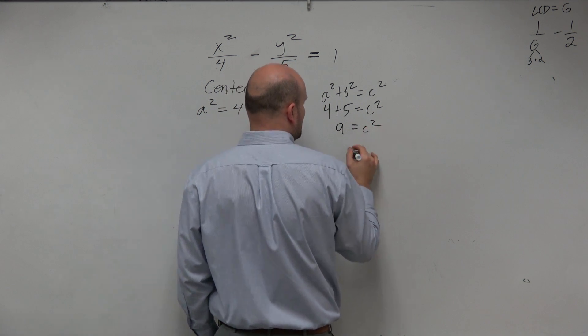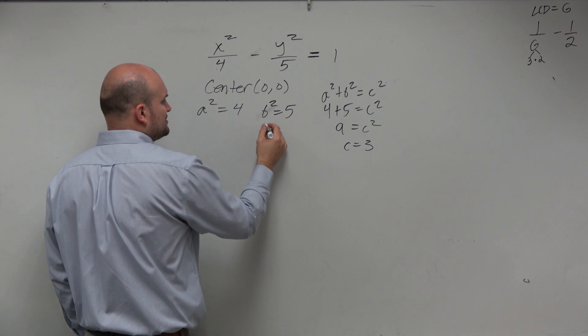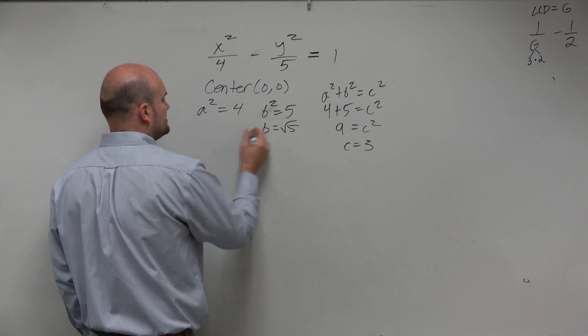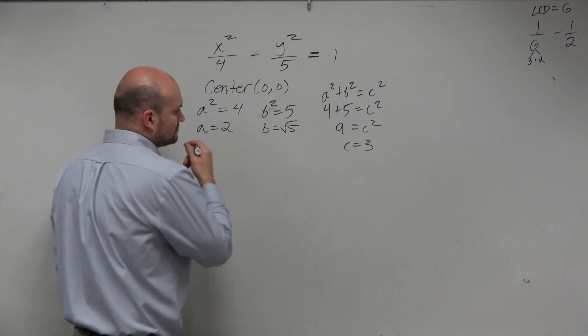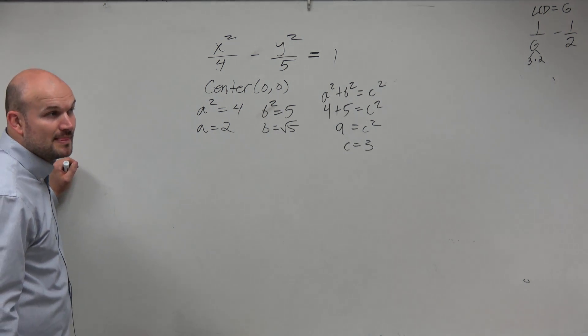9 equals c squared, so therefore, c equals 3. I'm not going to figure out, well, let's just figure out b for the sake of it. a equals 2, b equals square root of 5, and c equals 3. Is everybody OK with that?